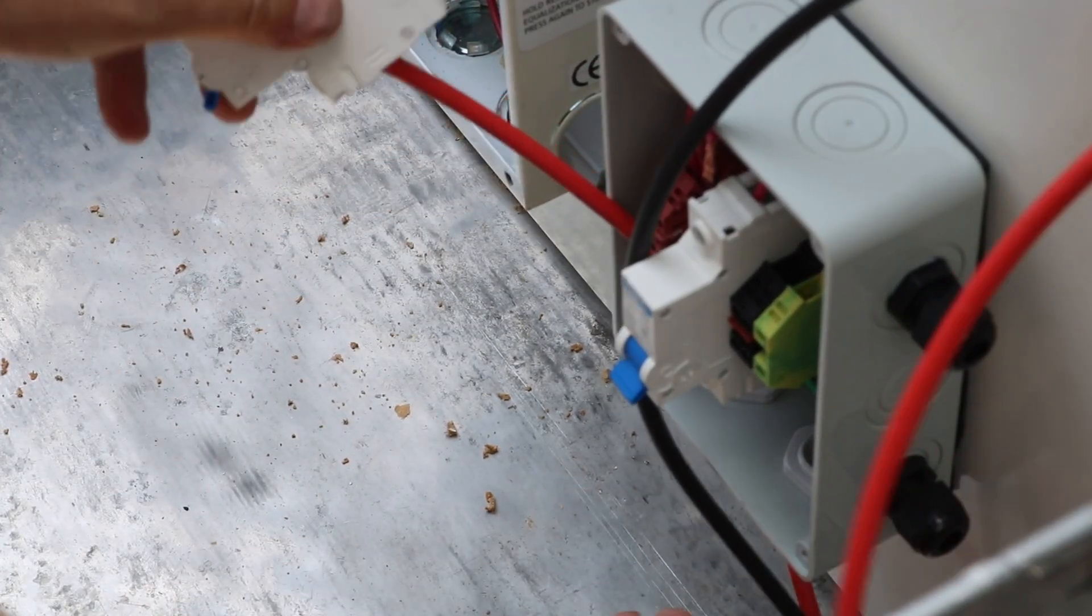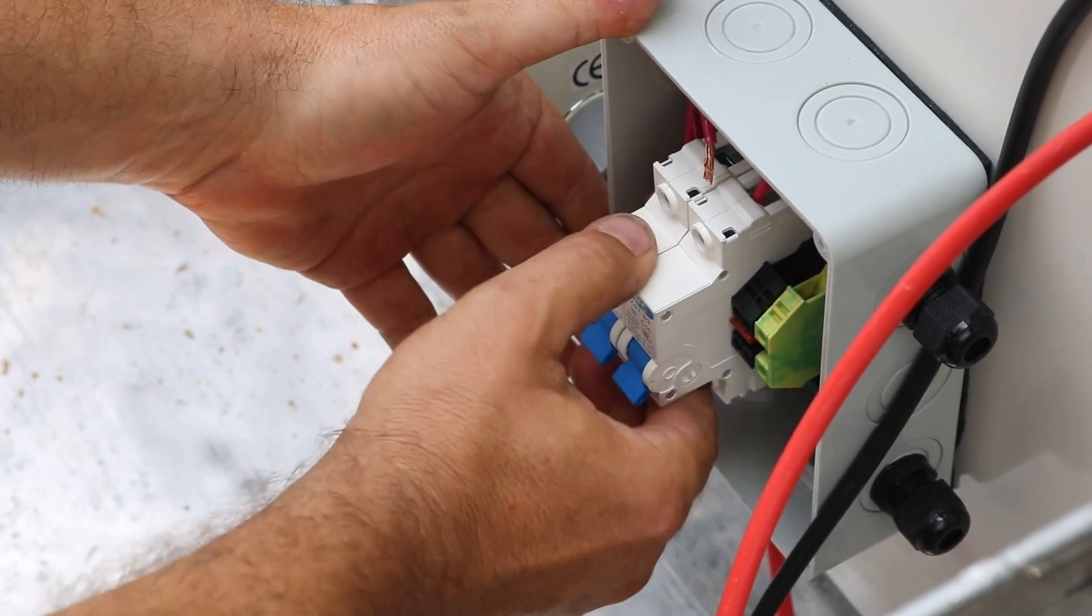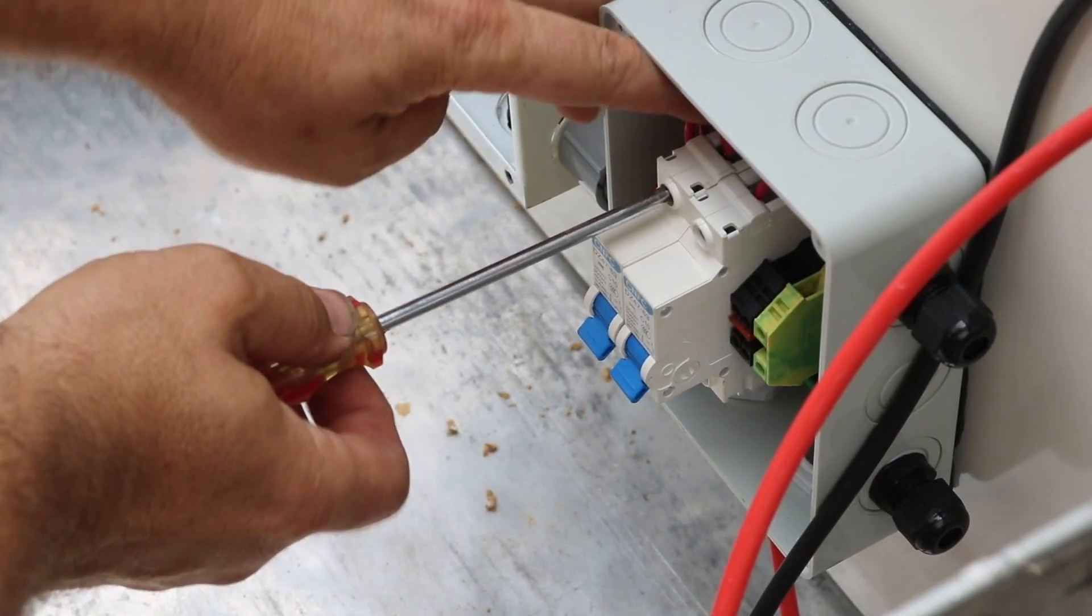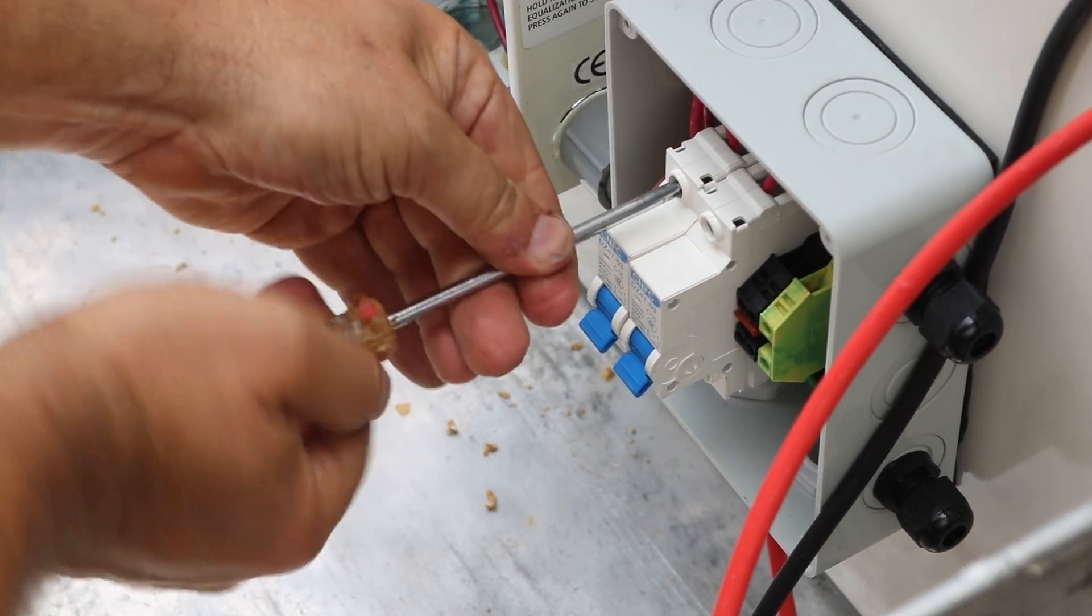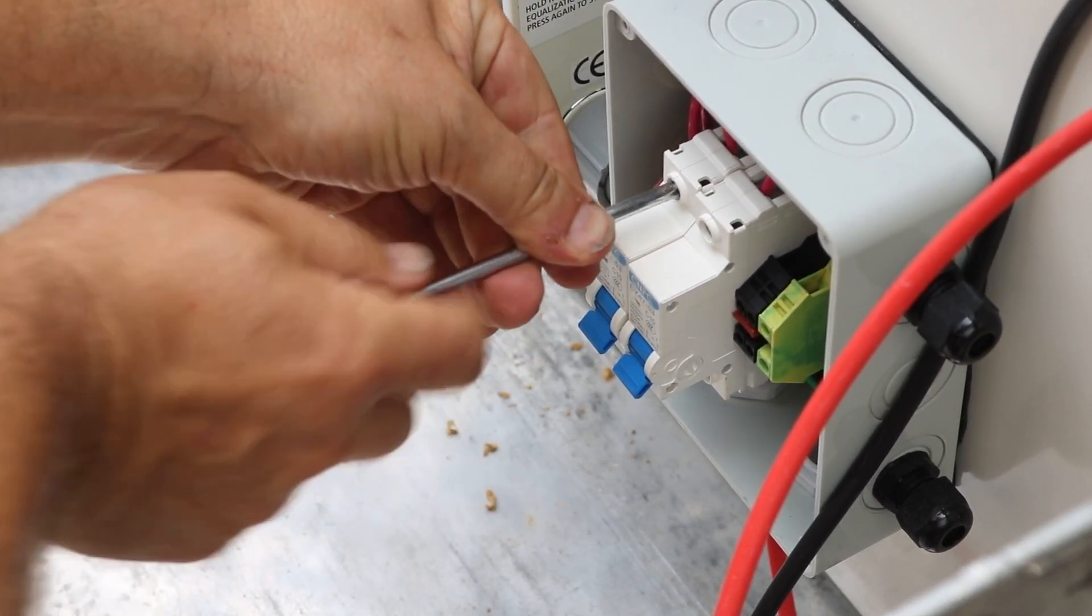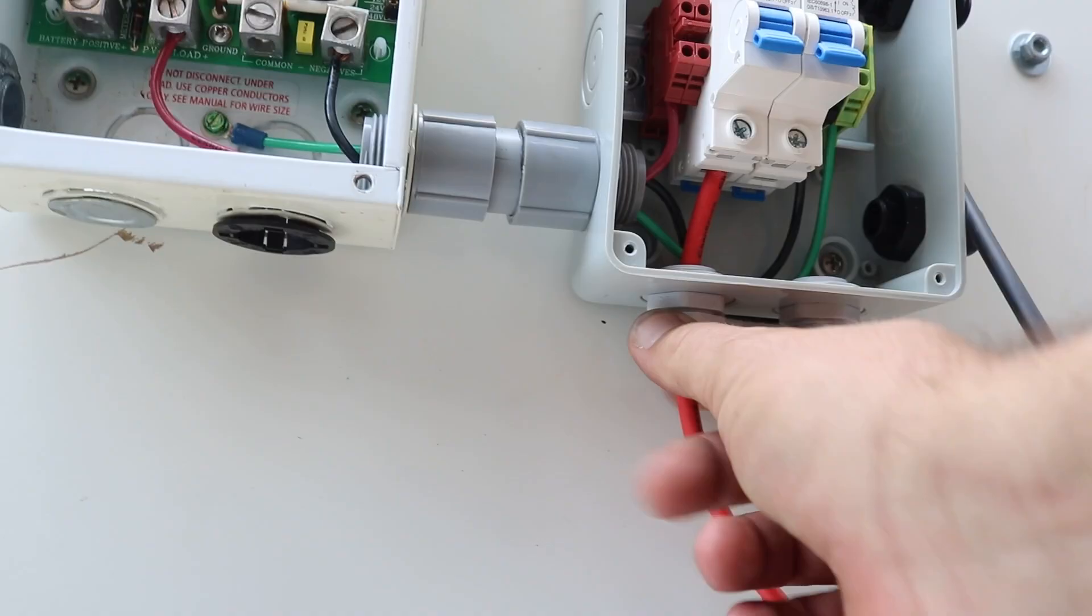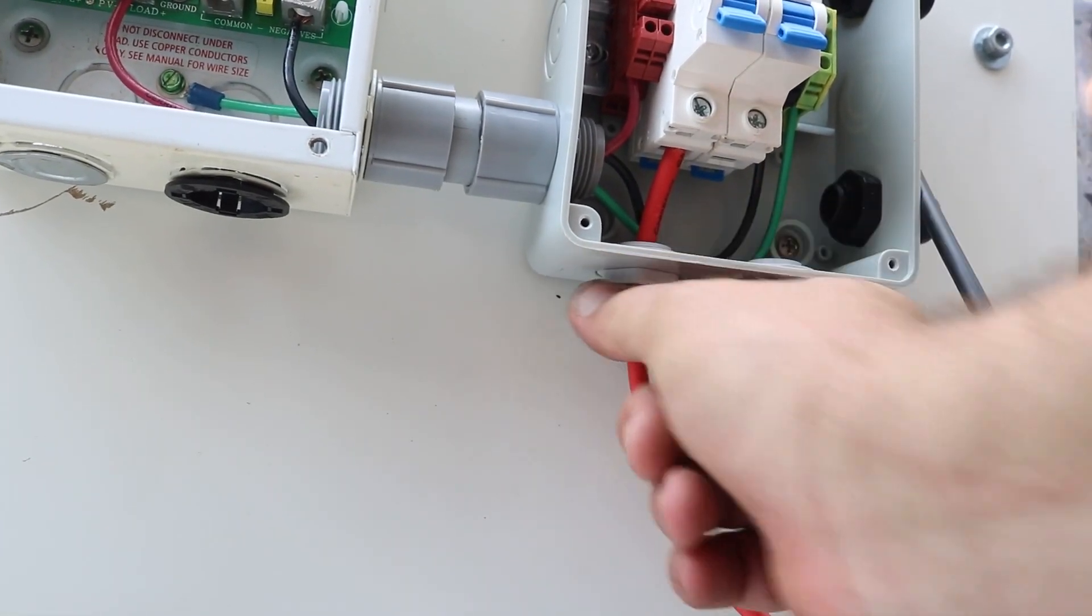And then I also had to reconnect the red wire going to our little combiner circuit in out to the solar charge controller. After that I tightened down the strain relief on our red positive wire.